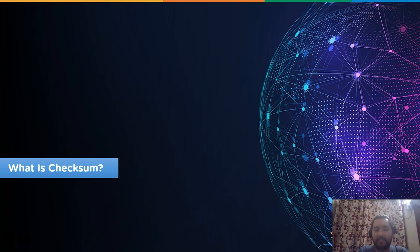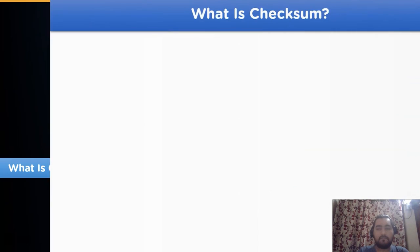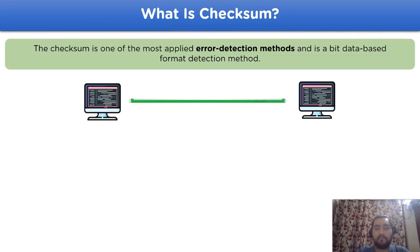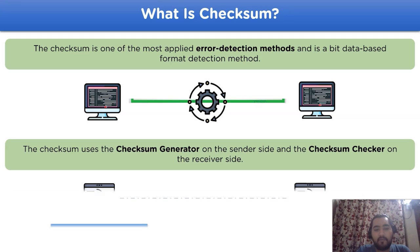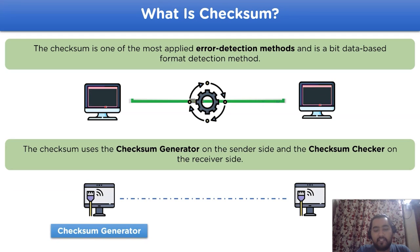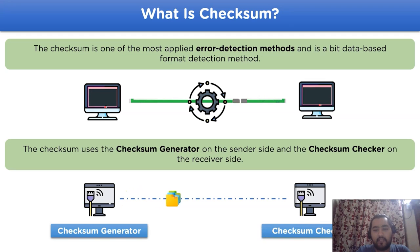The checksum is one of the most applied error detection methods in the network channel and is a bit-based error detection method. The checksum uses a checksum generator on the sender side and a checksum checker on the receiver side to check whether there is an error in the data or not.